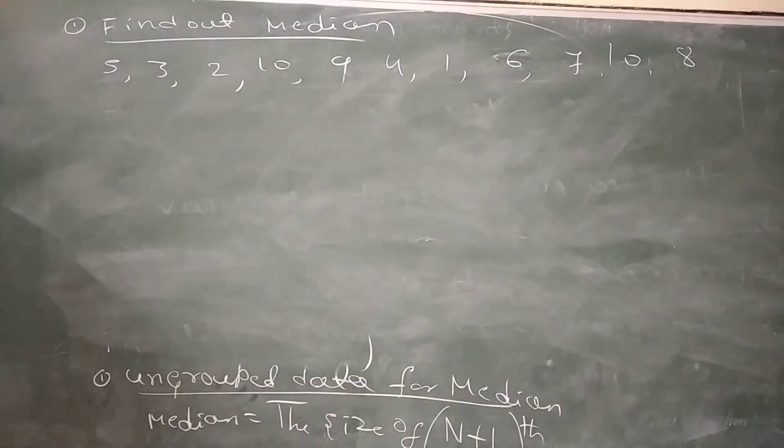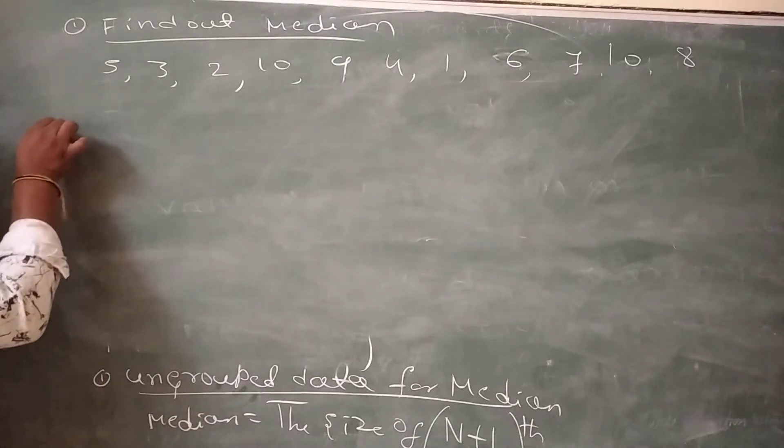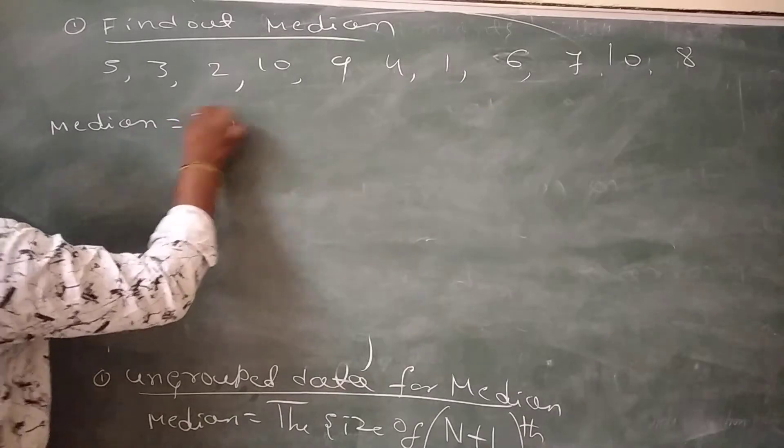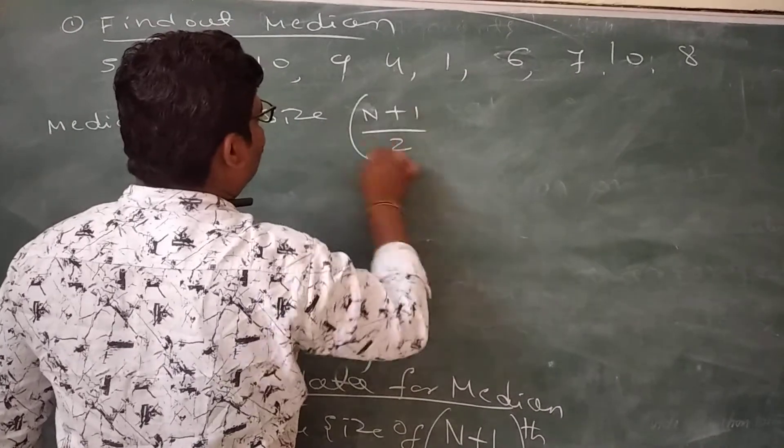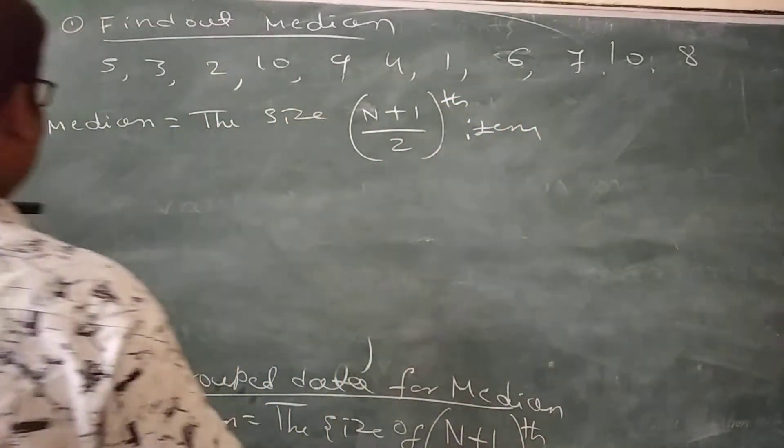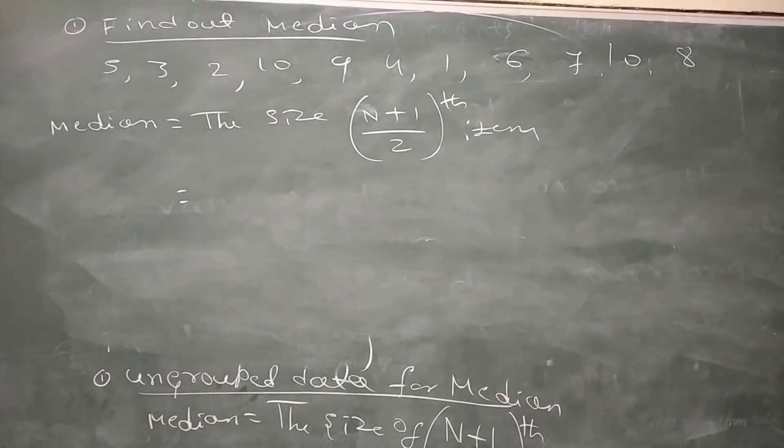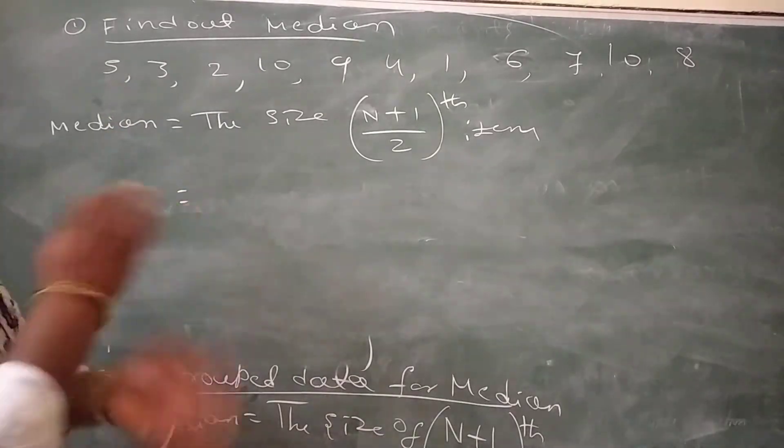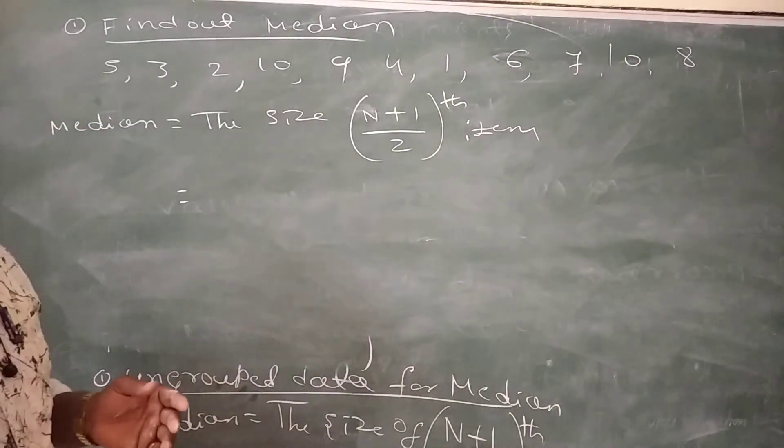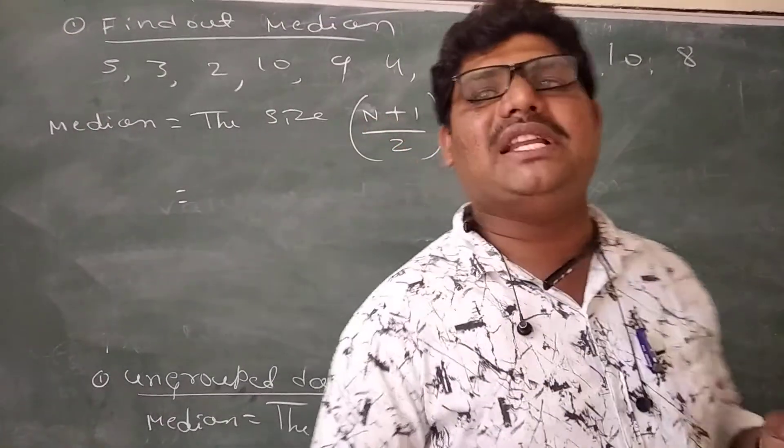Now, calculate the median value. The median formula, median equals to the size of n plus 1 by 2 of the items. The median, it is a positional average, and first, any data, convert into ascending order or descending order.